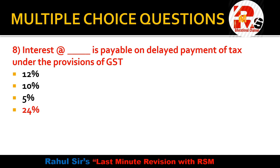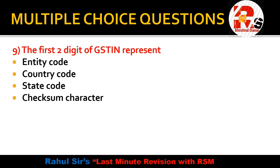The first two digits of the GSTIN represent — entity code, country code, state code, or checksum character? Earlier under VAT we had VAT/CST numbers; now under GST there is a GSTN number. The first two digits of the GSTIN represent the state code.